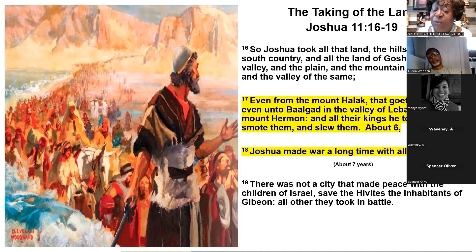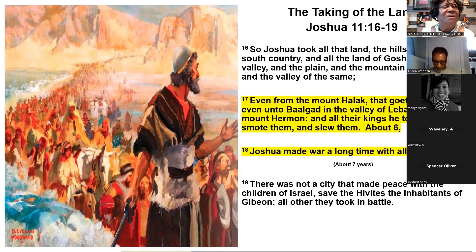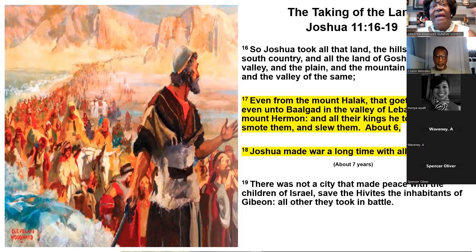There was not a city that made peace with the children of Israel, except the Hivites, the inhabitants of Gibeon — all others they took in battle. The reason why God wanted all these people killed? Because they did not serve him. They were sacrificing their children to false gods, they were prostituting one another, they were murdering people, doing things that were just ungodly. Before you can go in and take the land, you have to clean house. Because if any of these people are left, they're going to contaminate you. That's why God tells you to come out from among them and be separated.